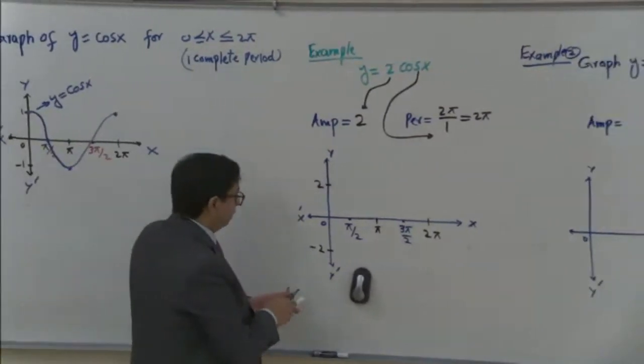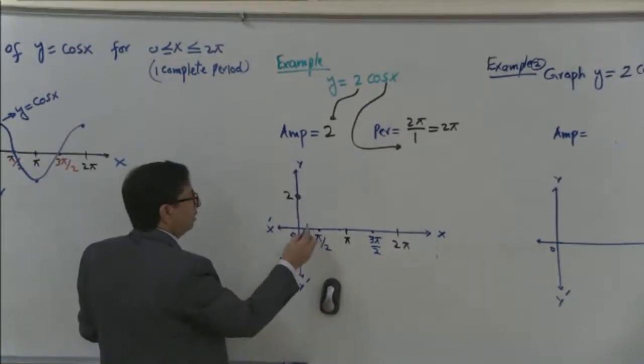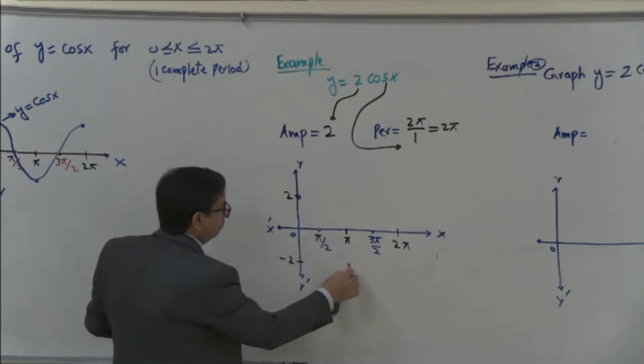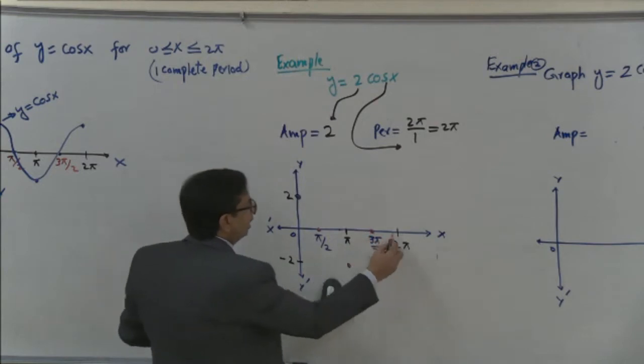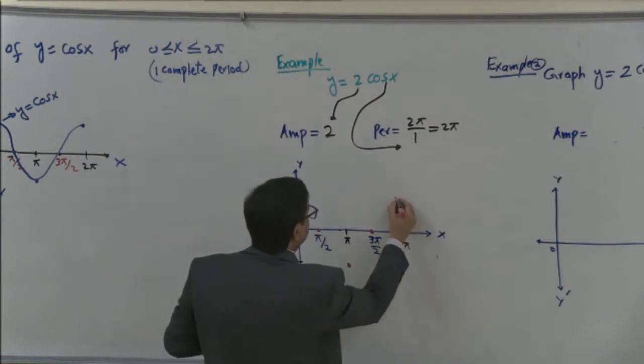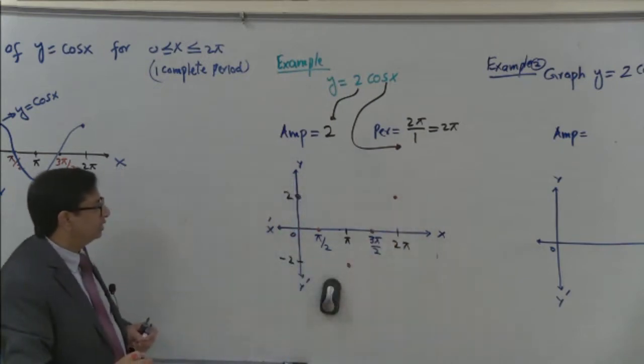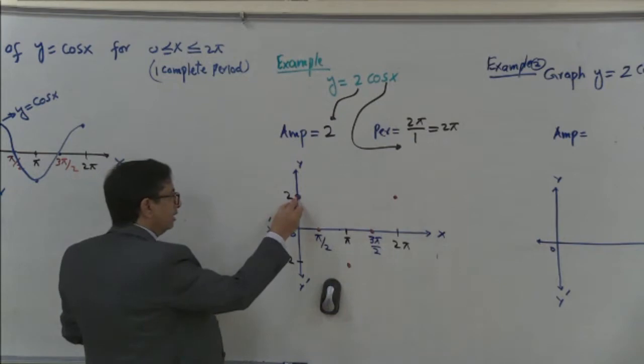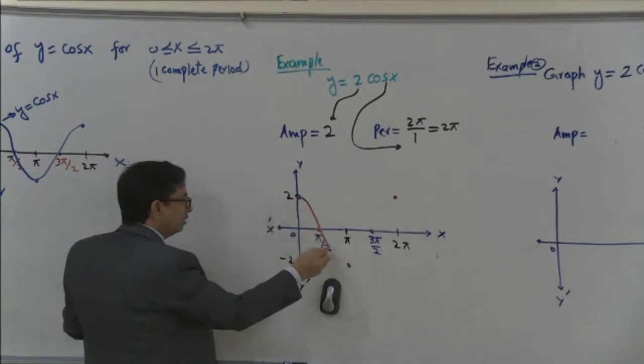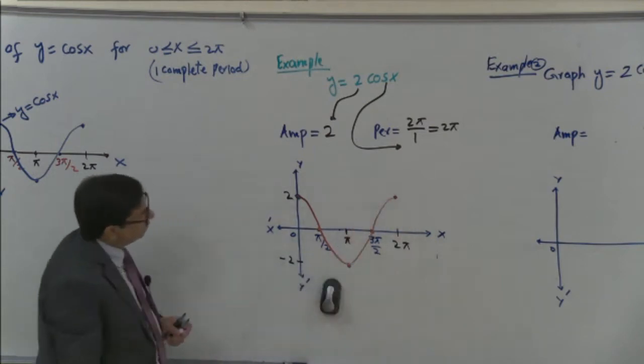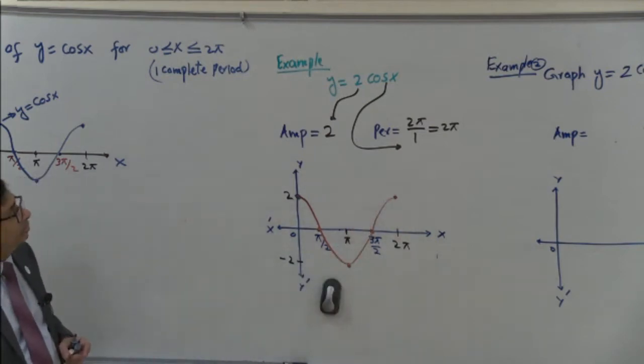So graph will start from this point. So we have 0, at 0 we have 2, at 90, 0, then minimum value, then 0s, and at this point it is the maximum value. Because 0 and 2π are at the same point in measuring circle. So this is the graph for y is equal to 2 cosine of x.